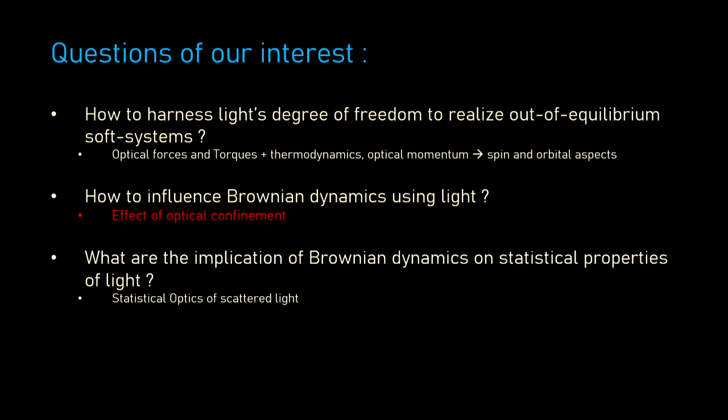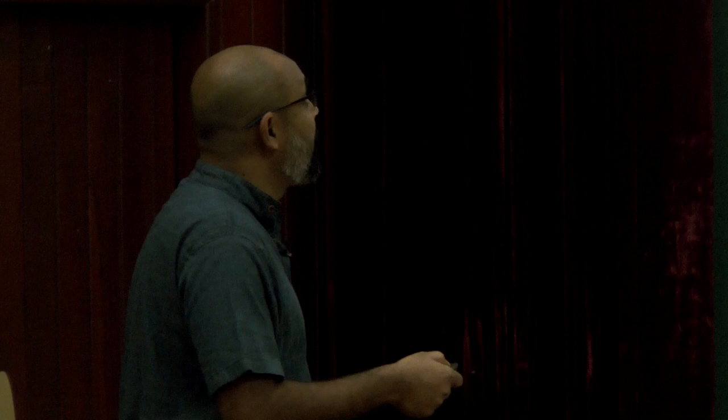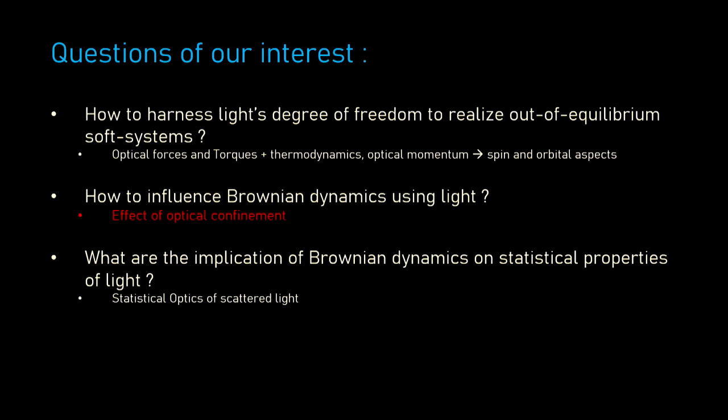The second question is how to influence Brownian dynamics using light. There are specific sub-questions we're interested in, such as the effect of confinement. The third question is what are the implications of this kind of Brownian dynamics on the statistical properties of light — essentially looking at what happens to the statistical optics of scattered light emerging from the interaction between light and soft matter.